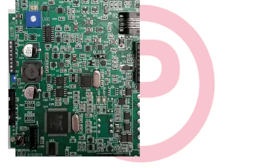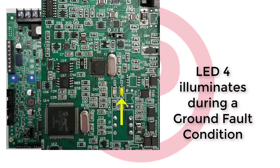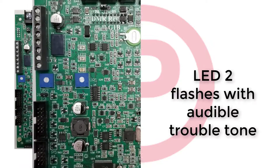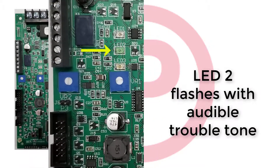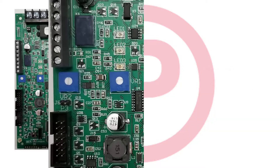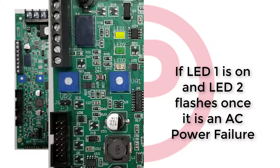If at any time you have a ground fault on the PVX system, LED 4 will illuminate yellow. In addition to the green LED flashing upon a trouble condition, an audible tone will be sounded at the voice panel. If the yellow LED is on and the green LED flashes once, this will represent an AC power trouble.